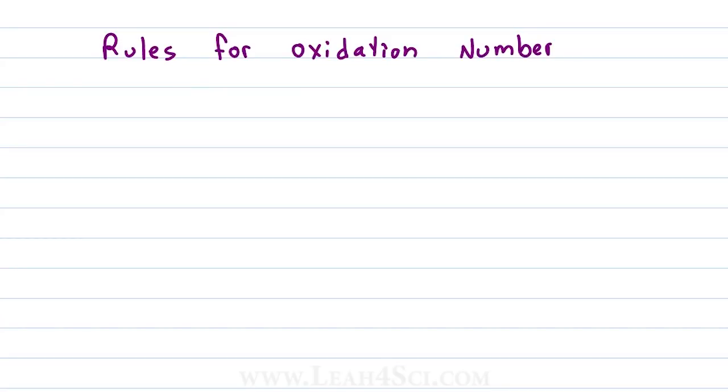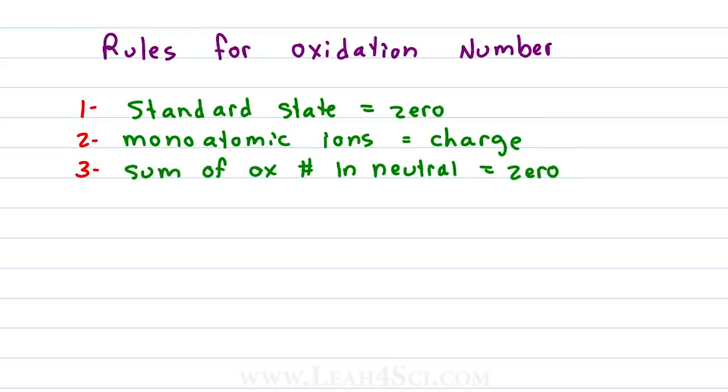But here are the rules I like to follow. An atom in its standard state or a standalone atom will have an oxidation number of 0. Monoatomic ions will have an oxidation number that is equal to their charge. The sum of the oxidation number in neutral molecules will add up to 0. The sum of oxidation numbers in polyatomic ions will equal the charge. Within these rules, we have additional rules for individual atoms. So let's go through some examples and learn the rules as we go.